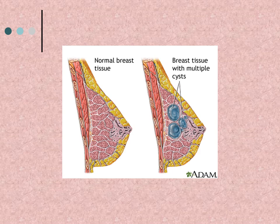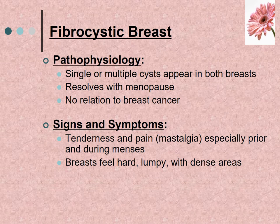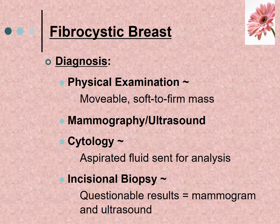This is a picture of normal breast tissue and breast tissue with multiple cysts. Single or multiple cysts appear in both breasts. They usually resolve with menopause and have no relation to breast cancer. Symptoms include tenderness and pain, also called mastalgia, especially prior to and during menses. Breasts feel hard, lumpy, and have dense areas.